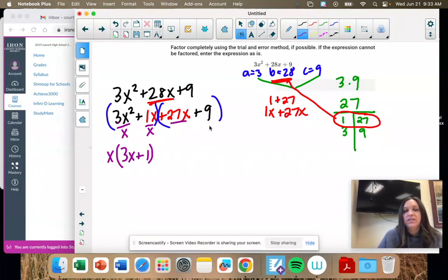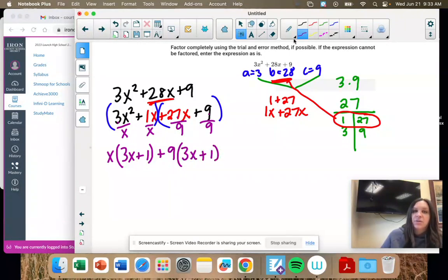Okay, next, 27X and 9. What's the greatest common factor? Well, they both don't have an X, so no X. But 27 and 9 both divide by 9. So we're going to take out a positive 9. And we're left with 3X plus 1.